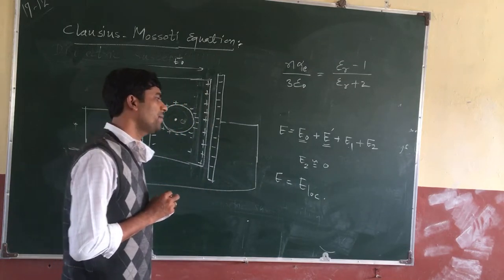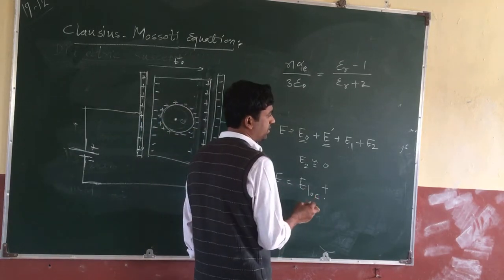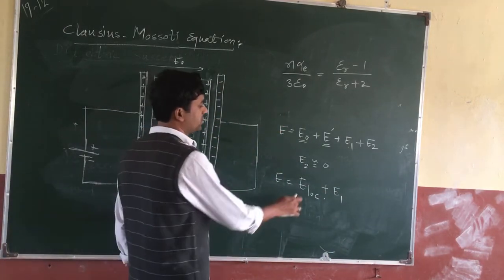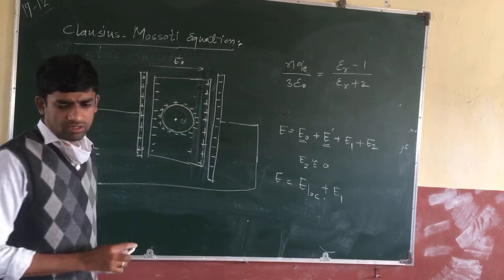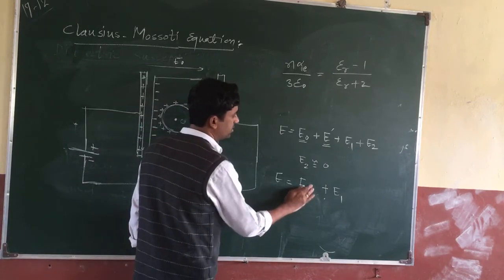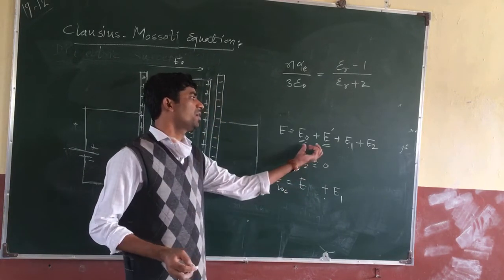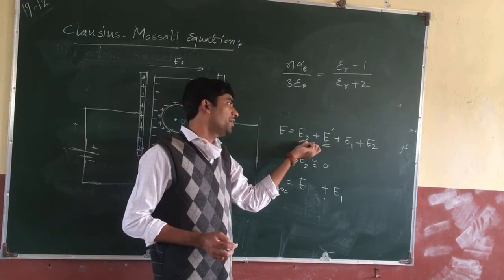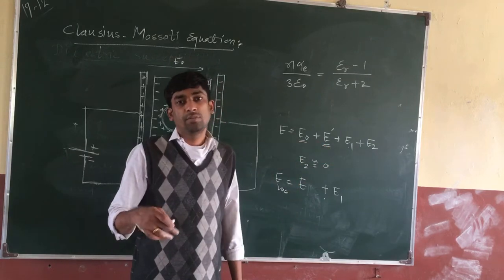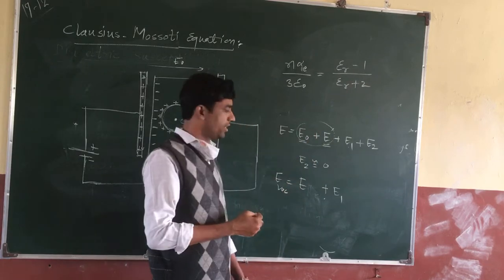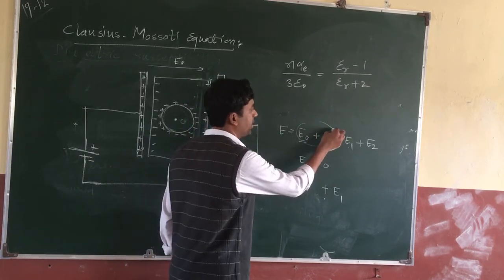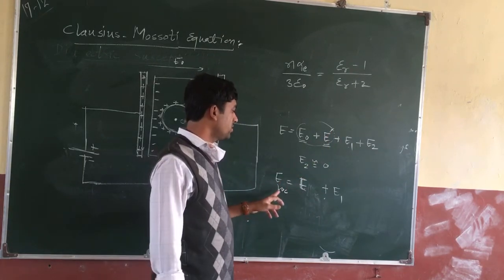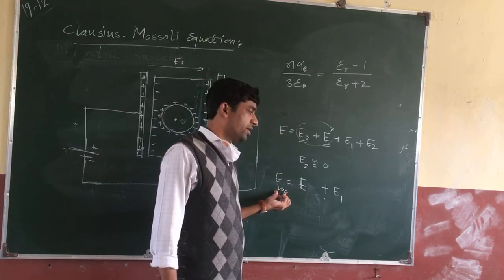So the local electric field, E_local, is the electric field experienced by the molecules present in the dielectric material. It is the sum of E0 (external electric field) plus E_dash (electric field due to polarization) plus E1. E0 plus E_dash together constitute the net electric field E. So E_local equals the net electric field E plus E1.